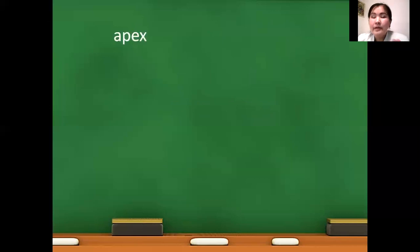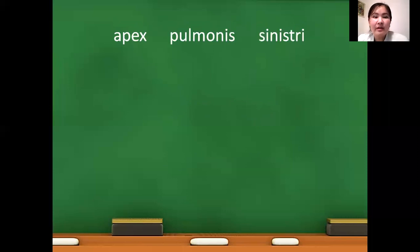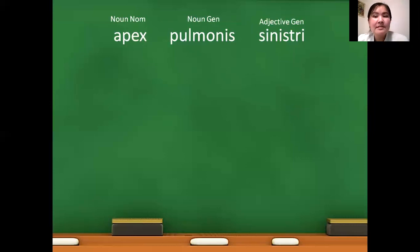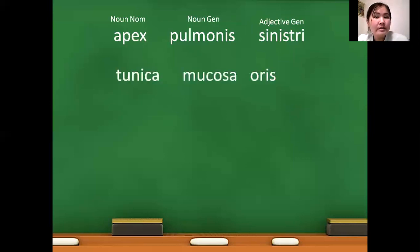Now let's look at terms that contain two nouns and one adjective. Apex pulmonis sinistri: apex is the nominativus noun, pulmonis is a noun in genitivus form, and sinistri is an adjective in genitivus form — meaning the apex of the left lung.